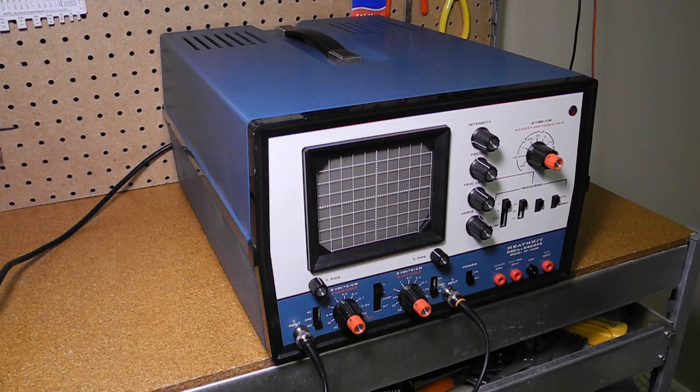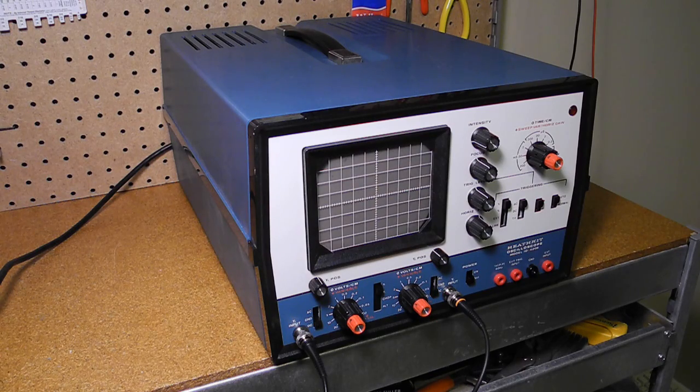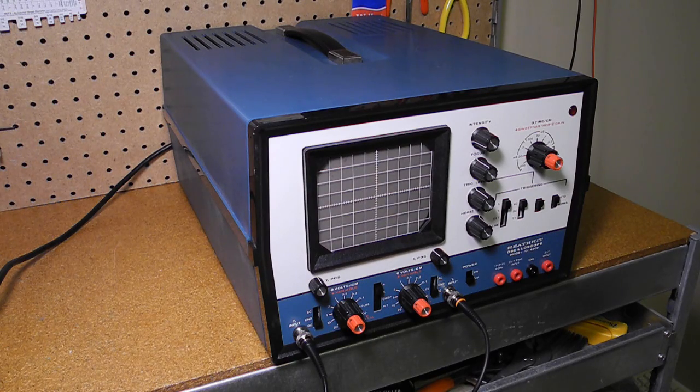The most important specification of an oscilloscope is its bandwidth, the range of frequencies over which you can accurately display signals. The IO4205 is a DC to 5 MHz scope. At the time this was pretty reasonable and suitable for most analog and digital circuits.